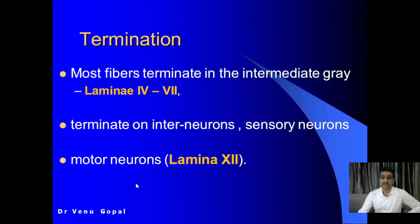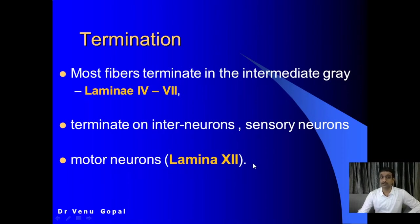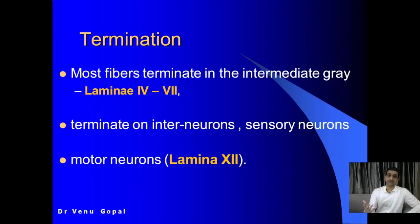Looking at termination in detail: most fibers terminate in the intermediate gray matter, that is lamina 4 to lamina 7, and they also terminate on interneurons and sensory neurons. But a few fibers terminate directly on motor neurons in lamina 9. Motor neuron here means the alpha motor neuron, or the lower motor neuron. Anything above this level is the upper motor neuron.